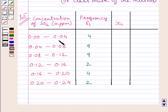We know class mark is equal to upper class limit plus lower class limit upon 2. So, 0.04 plus 0.00 upon 2 is equal to 0.02. Similarly, class mark of this class interval is equal to 0.06.